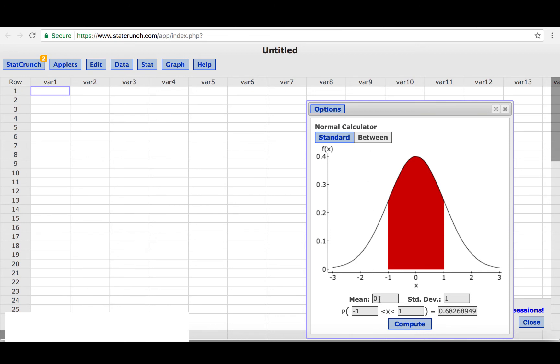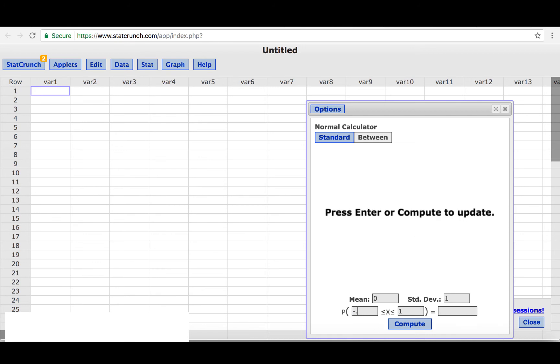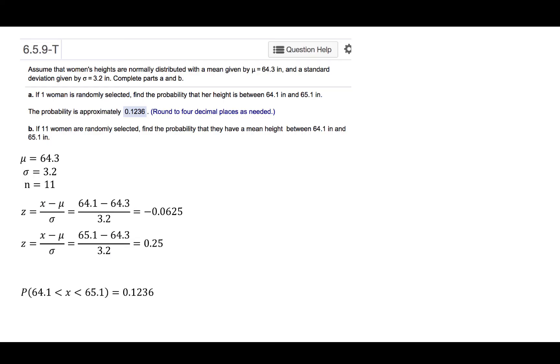We're going to use z-scores, so we'll leave the mean at 0 and the standard deviation at 1. Now we will enter the z-scores that we found, minus 0.0625 and 0.25, and then click Compute. We find that area to be 0.1236 when we round to four decimal places. So the probability that one randomly selected data value from the population would be between 64.1 and 65.1 is 0.1236.